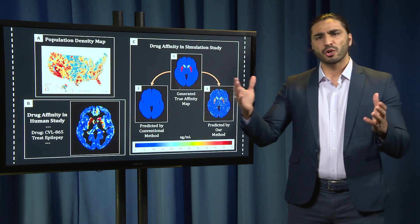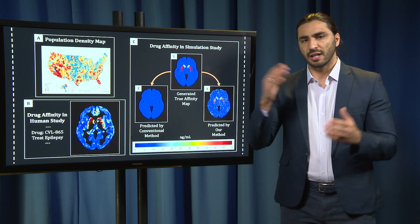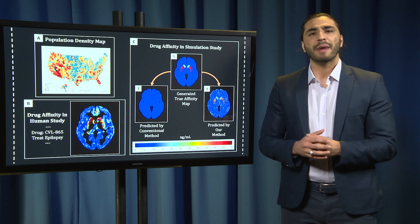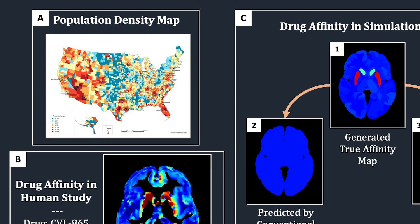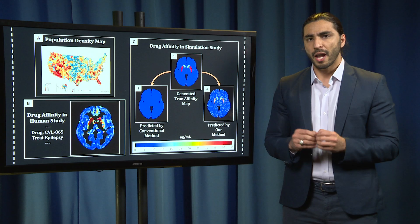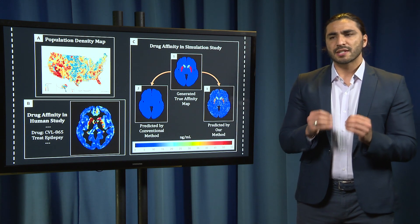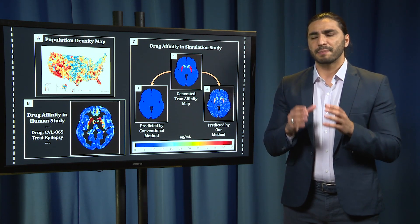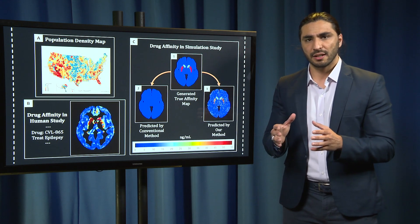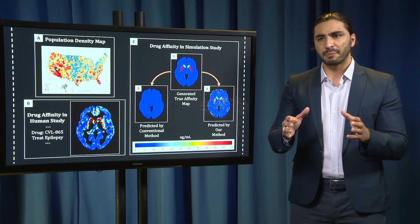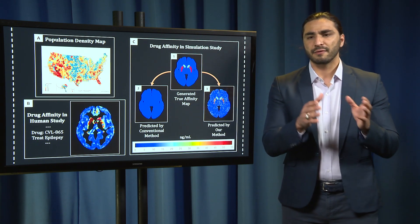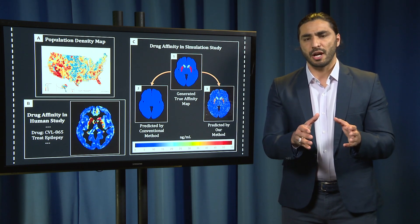Now imagine you're overseeing COVID-19 vaccine distribution in the states. Looking at a population density map in A, would it be wise to send the same number of vaccines to every state? Of course not. Just as COVID vaccine distribution depends on population density, drug affinity in the brain depends on factors such as population density and variation of receptor types.